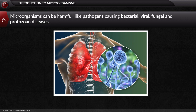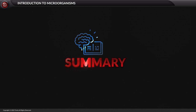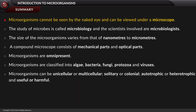In summary: microorganisms cannot be seen by the naked eye and can be viewed under a microscope. The study of microbes is called microbiology and the scientists involved are called microbiologists. The size of microorganisms varies from nanometers to micrometers. A compound microscope consists of mechanical and optical parts. Microorganisms are omnipresent and are classified into algae, bacteria, fungi, protozoa, and viruses. They can be unicellular or multicellular, solitary or colonial, autotrophic or heterotrophic, and useful or harmful.